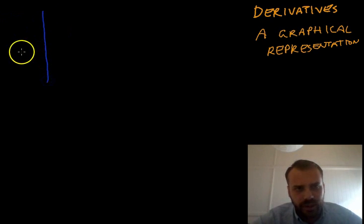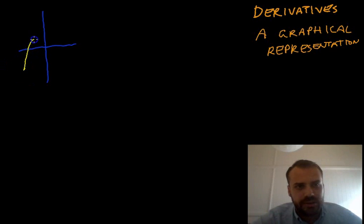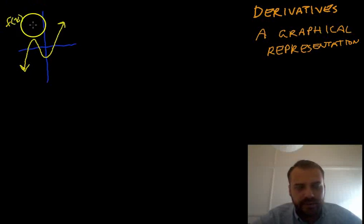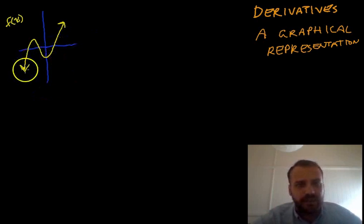So I'm just going to draw your standard cubic function. Here's a cubic function, something like this. We'll just call it f of x. It could be something like x cubed plus 3x squared minus 2x plus 5.